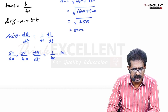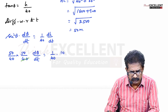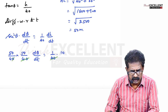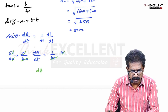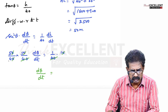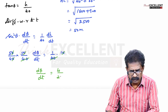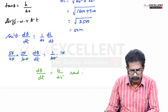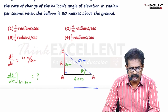Canceling on both sides: the 40s cancel and the 10 simplifies. So dθ/dt = 4/25 radians per second. That is option number 2.